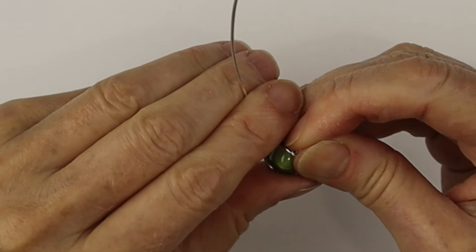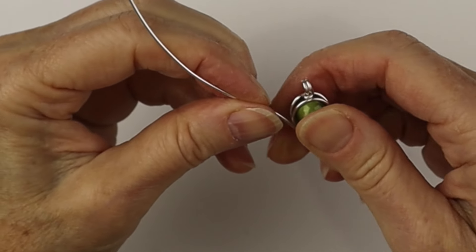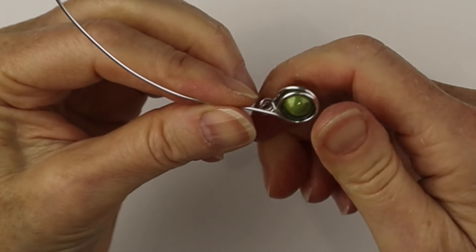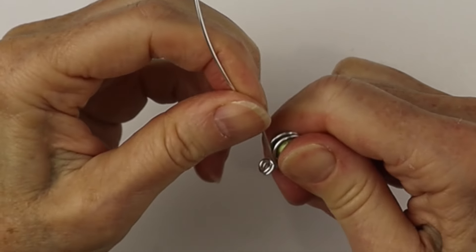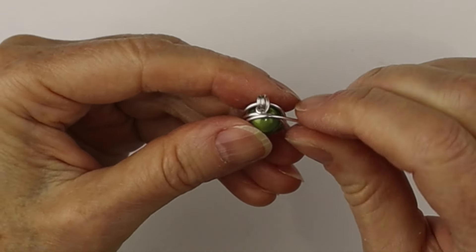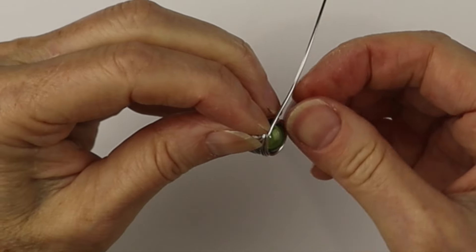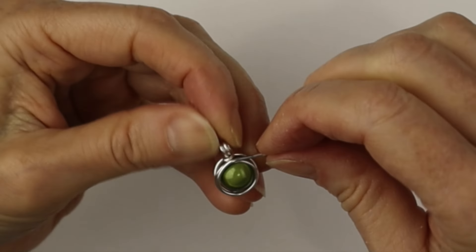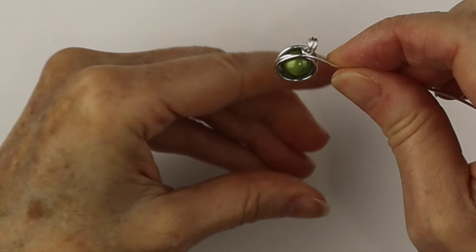One full turn and back up, pushing it so it's in a good position. So now it's up at the top. You might have to push the wire back a bit to show more of the bead.